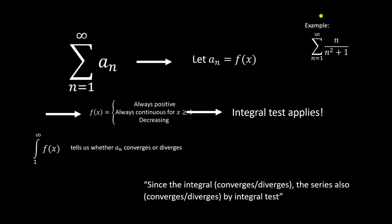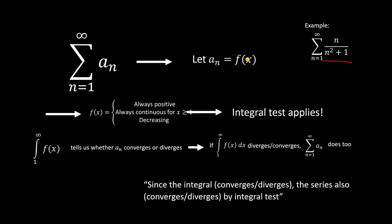Next is the integral test — yep, we still have calculus in series. We use this if the stuff in the series can easily be integrated. The function also needs to meet some conditions: it has to always be positive, continuous, and decreasing for all n greater than or equal to 1. So if we take the series and make the stuff inside a function, we see that it is indeed positive, continuous, and decreasing, since the denominator can never be 0 or negative and the power on top is less than the power on the bottom. If conditions are met, it tells us that if we integrate the stuff in the series from 1 to infinity, that will tell us if the series converges or diverges — if the integral converges, so does the series; if the integral diverges, the series does too.